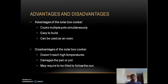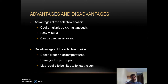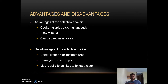The advantages of the solar box cooker: it can cook multiple pots simultaneously depending on the size of the box, it is easy to build using simple materials, and it can be used as an oven to bake cakes and bread. The disadvantages: it doesn't reach high temperatures so it cannot be used to fry or grill foods, it can damage the pan or pot because heat is not evenly distributed inside the box, and it may require tilting to follow the sun.